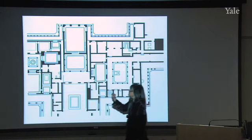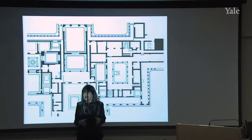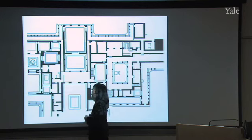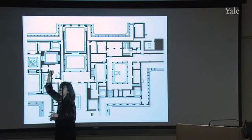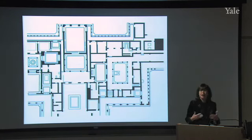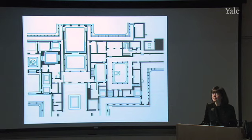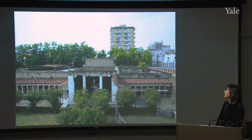The most important room for us today is room number eight, which is a rectangular room — the caldarium, or the warm room, of the bath. It has some very interesting paintings that will show us the transition between what we know as Second Style Roman wall painting and what we term Third Style Roman wall painting. This is a view of the villa as it looks today; like Herculaneum, it is very closely surrounded by modern apartment houses.